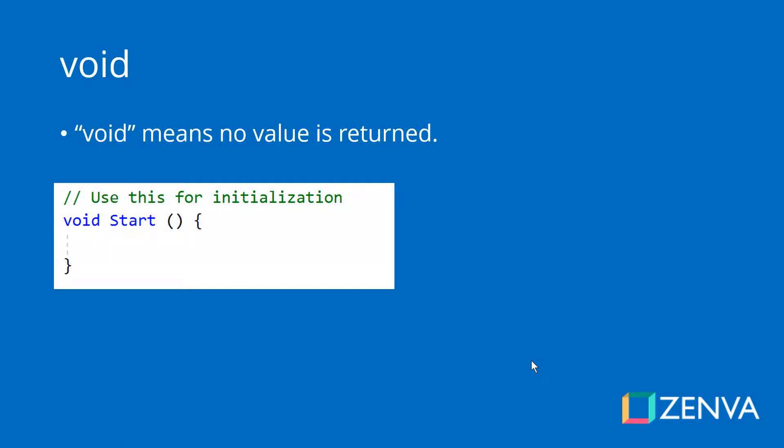Void means that there is no value returned. It basically means this is a factory that doesn't produce any output. It could do things like showing something to a user or many other things, but it doesn't have a return value.